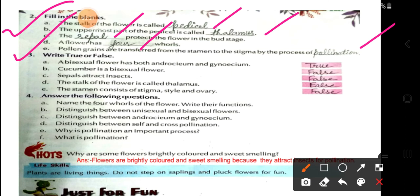Question 3: True or False. If the statement is correct, write true; if wrong, write false. A — a bisexual flower has both androecium and gynoecium: True. B — cucumber is a bisexual flower: False. C — sepal attracts insects: False. D — the stalk of the flower is called thalamus: False. E — the pistil consists of stigma, style, and ovary: False.